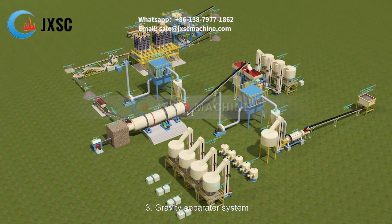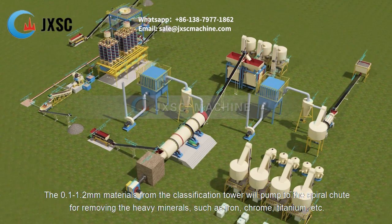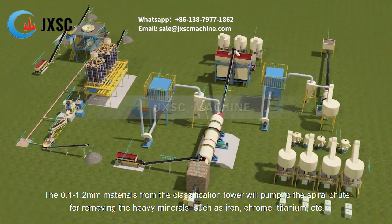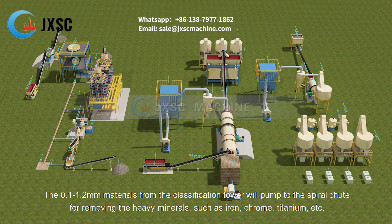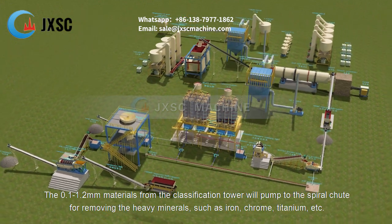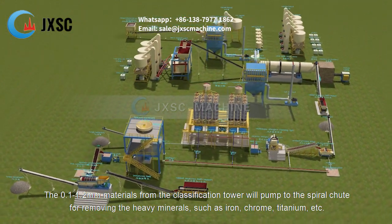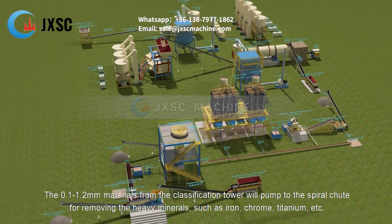3. Gravity separator system. The 0.1 to 1.2 millimeters materials from the classification tower will be pumped to the spiral chute for removing heavy minerals, such as iron, chrome, titanium, etc.